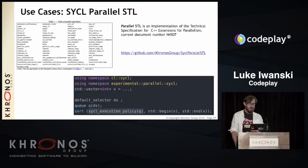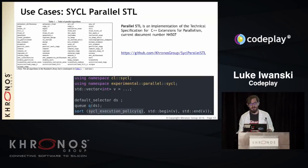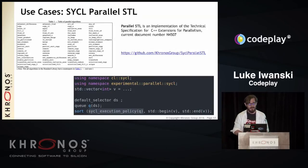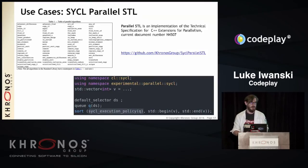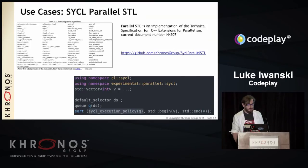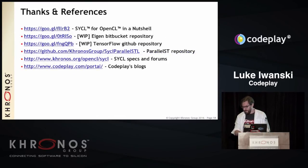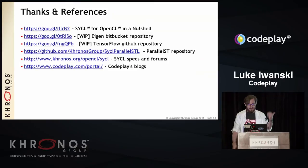Another SYCL use case is the SYCL parallel STL — an implementation of the C++ technical specification for parallelism extensions. It's basically a set of well-defined parallel functions, hosted on the Khronos repository. We've ported a subset of these functions to SYCL. The syntax is very similar to normal STL — you just pass in an execution policy. It's still a work in progress. Thank you, and I'll pass the microphone to Matthias.